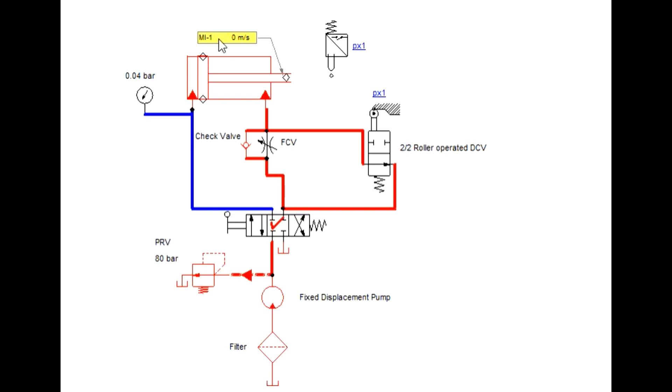Let us see working. When first position is actuated, this cylinder extends. When it approaches the mechanical switch, this mechanical element presses the 2 by 2 roller direction control valve which closes the ports.